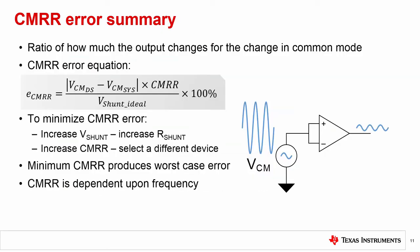So, let's take a minute to summarize what we learned in this video. First, common mode rejection ratio defines how much the output changes when changing the voltage common to both inputs of the current shunt amplifier. Second, to calculate CMRR error, you first convert CMRR into units of volt per volt, if it's not already in that form. Then you take the product of the CMRR and the difference between the datasheet common mode and the intended design common mode. Lastly, you take the ratio of this product to the ideal shunt voltage. To minimize CMRR error, you can either increase V-shunt by increasing R-shunt or increase CMRR by selecting a different device. Use the minimum CMRR spec for the worst case analysis. Lastly, CMRR is frequency dependent.